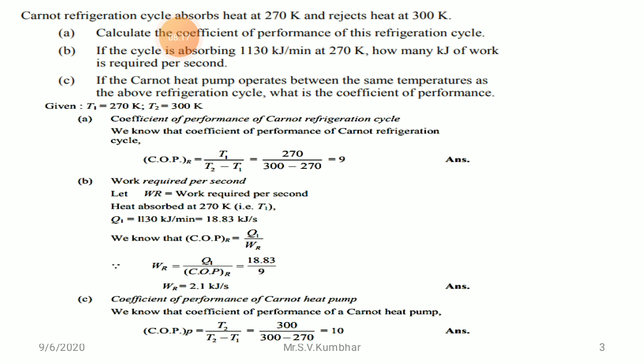The important formulas to remember are: COP of refrigerator = TL / (TH minus TL), and COP of heat pump = TH / (TH minus TL). These two formulas look similar but differ in the numerator — use TL for refrigerator and TH for heat pump. Also remember: COP of refrigerator = Q1 / W_R. In this way we solve numericals. Thank you.